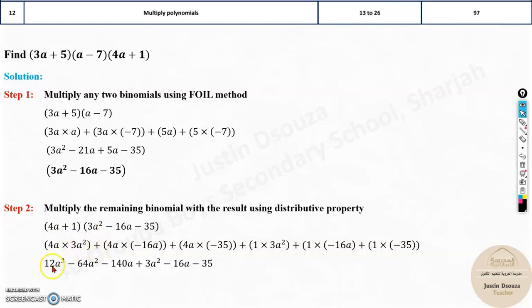4 times A is 12. A times A squared is A cubed. This minus sign will come out. It will be 4 times 16 is 64. A times A is A squared. Then again, minus sign is there. 140 because 35, 4 times is 140. A, 3A squared, negative 16A. And lastly, minus 35.